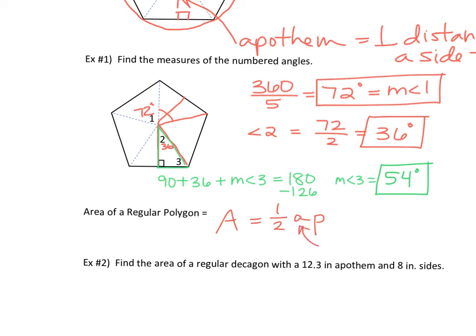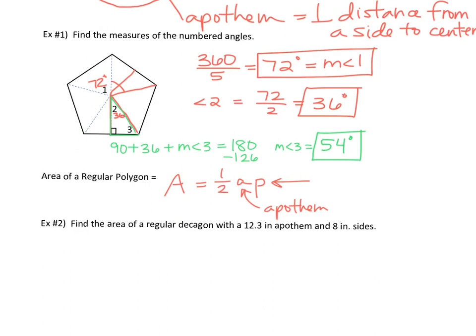What was A again? The apothem. P. What's P typically? Perimeter. So P is the perimeter of the regular polygon.